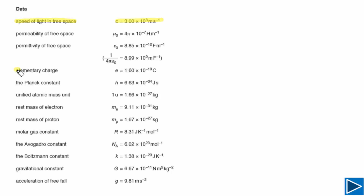The second constant you need for AS Physics is the elementary charge: 1.60 × 10⁻¹⁹ coulombs. This equals the charge on a single proton and the magnitude of charge on a single electron. The sign of charge for the electron is negative and for the proton is positive, but the magnitude is the same.